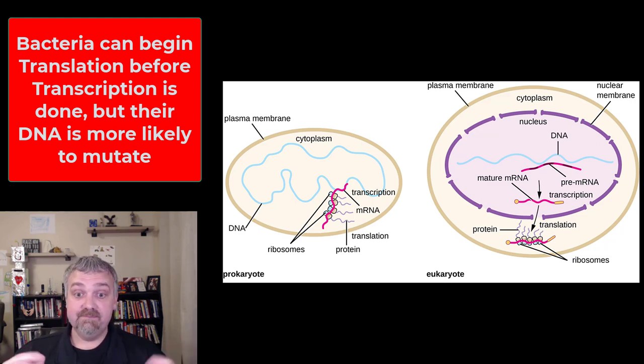With bacteria, they don't have a nucleus. So translation can actually start before transcription is even done. So it's faster, right? Bacteria, they can make proteins faster than us, but they also aren't protecting their DNA, so they have more mutations than us. So not one better than the other. It just depends on what you're looking at.